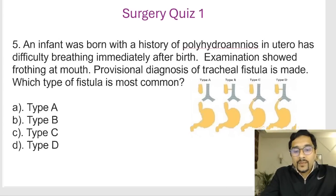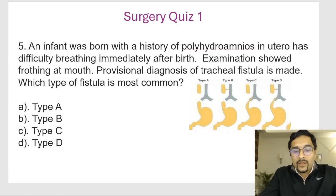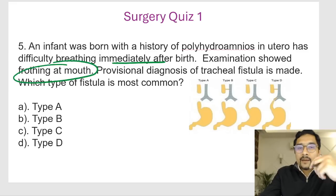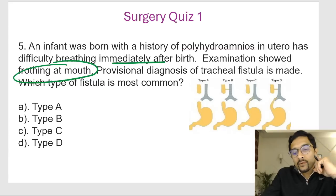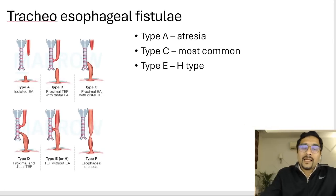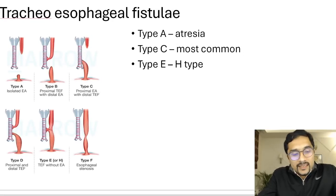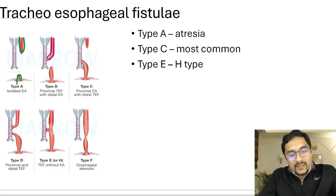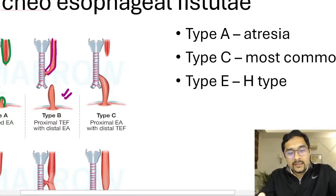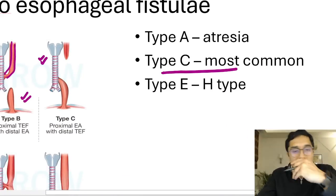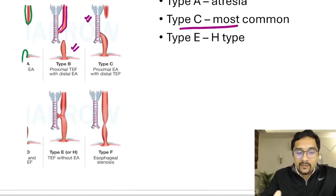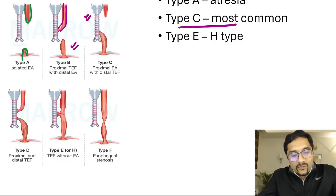Question 5: an infant is born with maternal polyhydramnios and had difficulty breathing immediately after birth with frothing of the mouth. A provisional diagnosis of tracheoesophageal fistula is made — which type is most common? Type C is the most common. Type A is pure atresia with both ends not communicating. Type B has the proximal end communicating with the trachea, distal end blind-ending. Type C — the most common — has a blind-ending proximal end but the distal end communicates with the trachea. Type D has both ends communicating and Type E (H-type) has a patent esophagus with a communication.